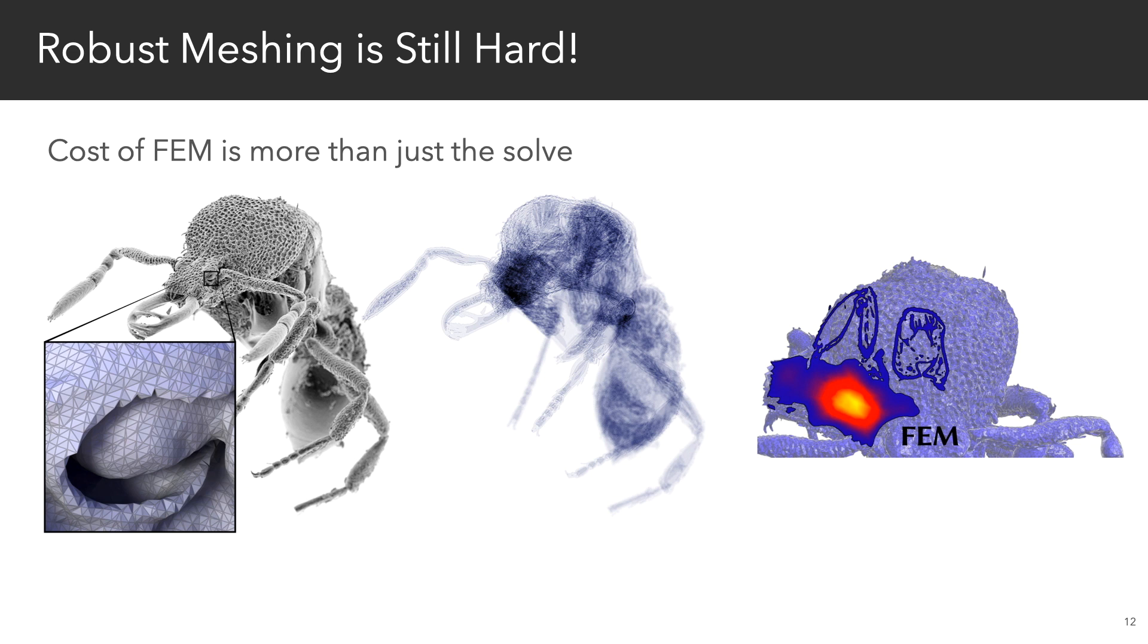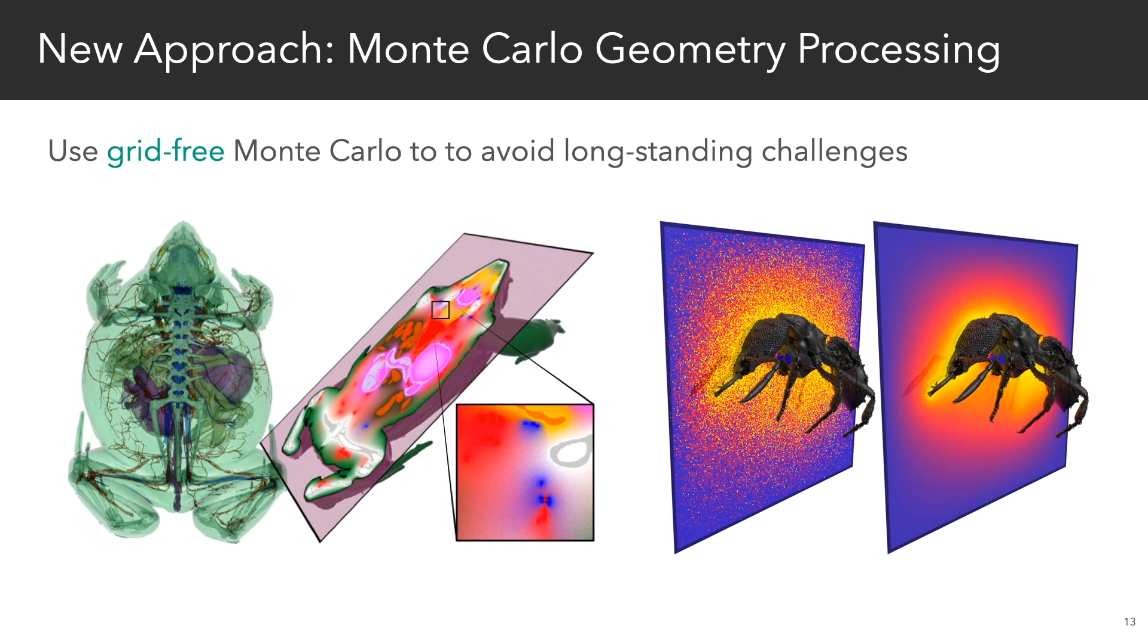So for example, with this model, it takes 14 hours just to generate the mesh, while the finite element solve takes just a couple of minutes.